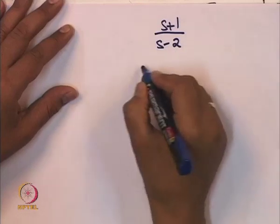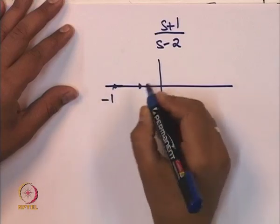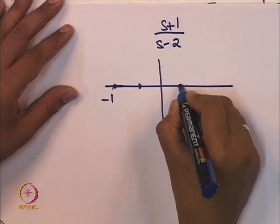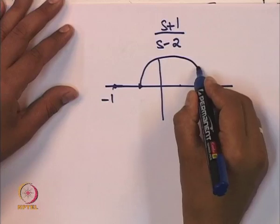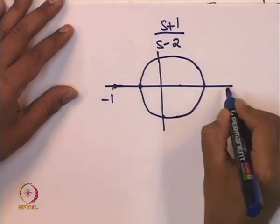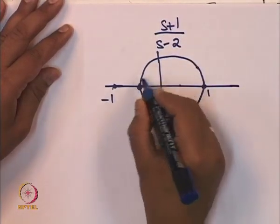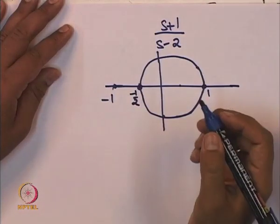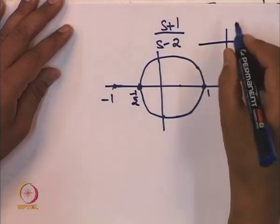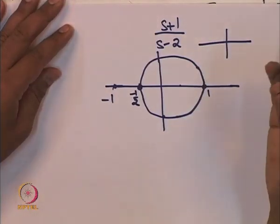Consider G = (s+1)/(s−2). The Nyquist plot for this first-order system is a circle. The real axis intersections are: at s → ∞, we get 1; and at s = 0, we get −1/2. For a good understanding, one needs familiarity with Bode plots, Nyquist plots, and root locus before working with nonlinear systems.